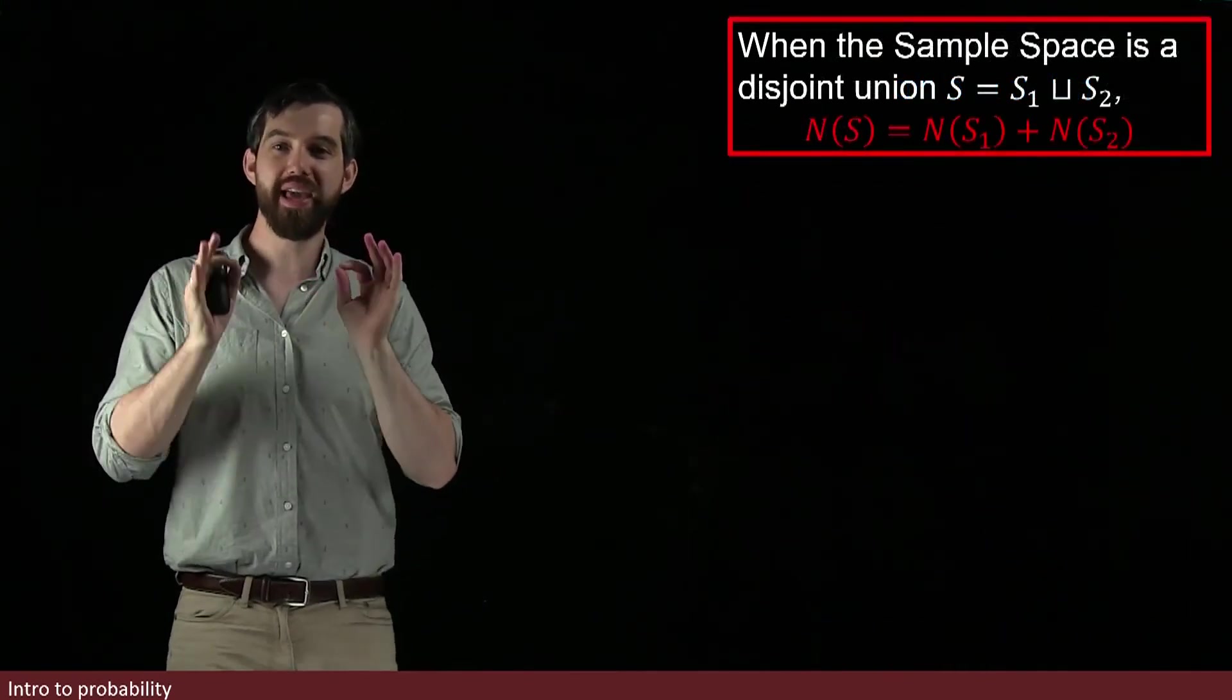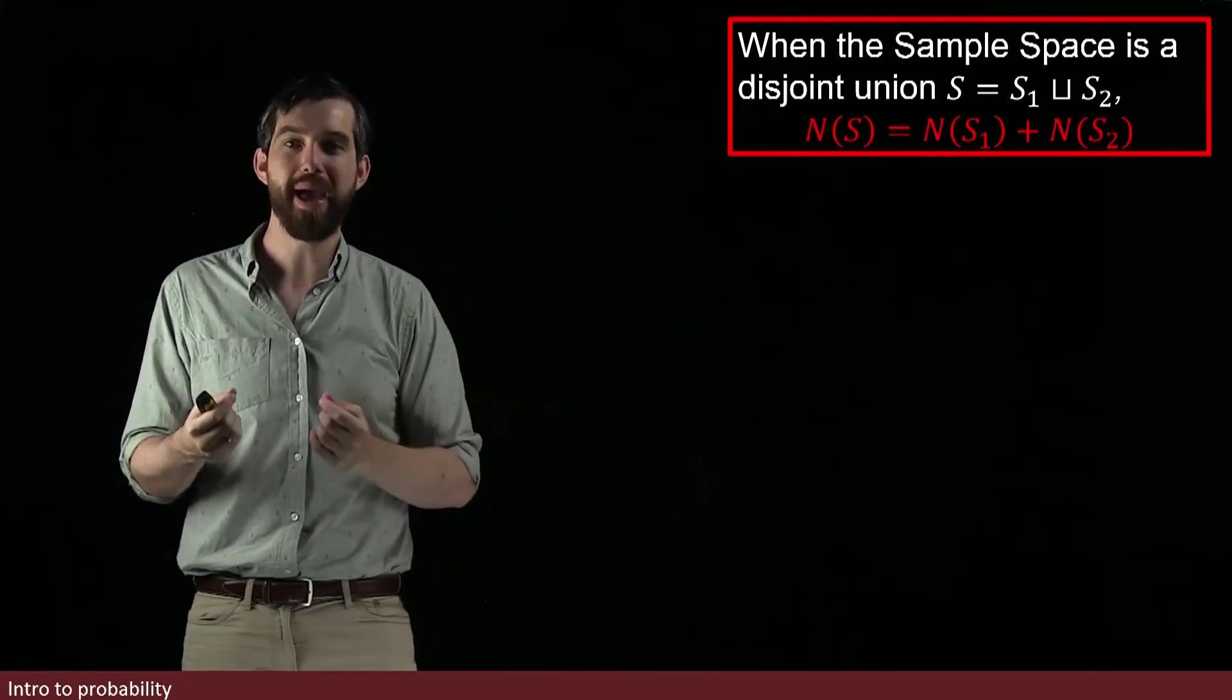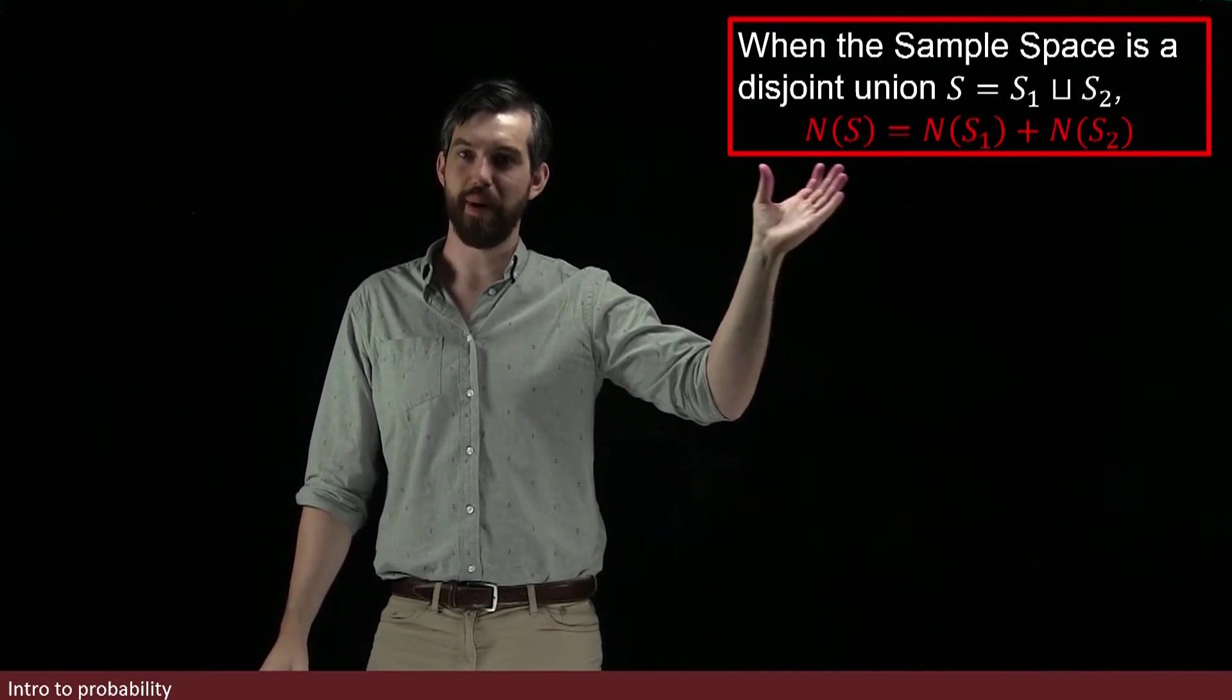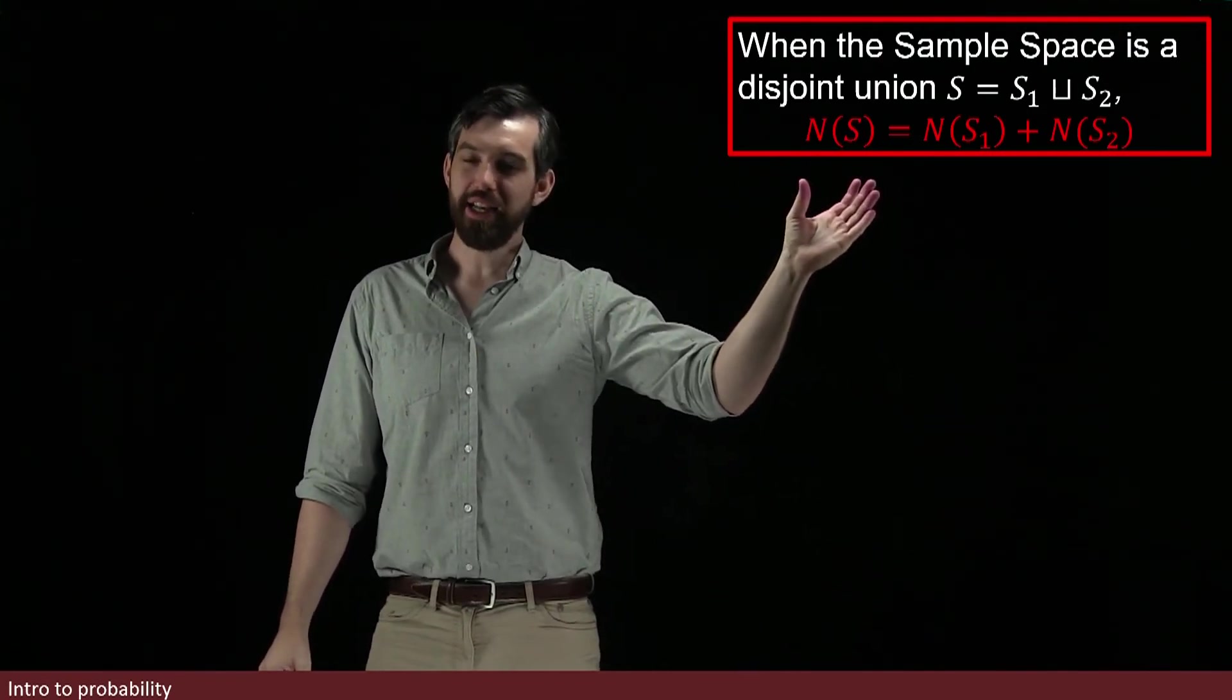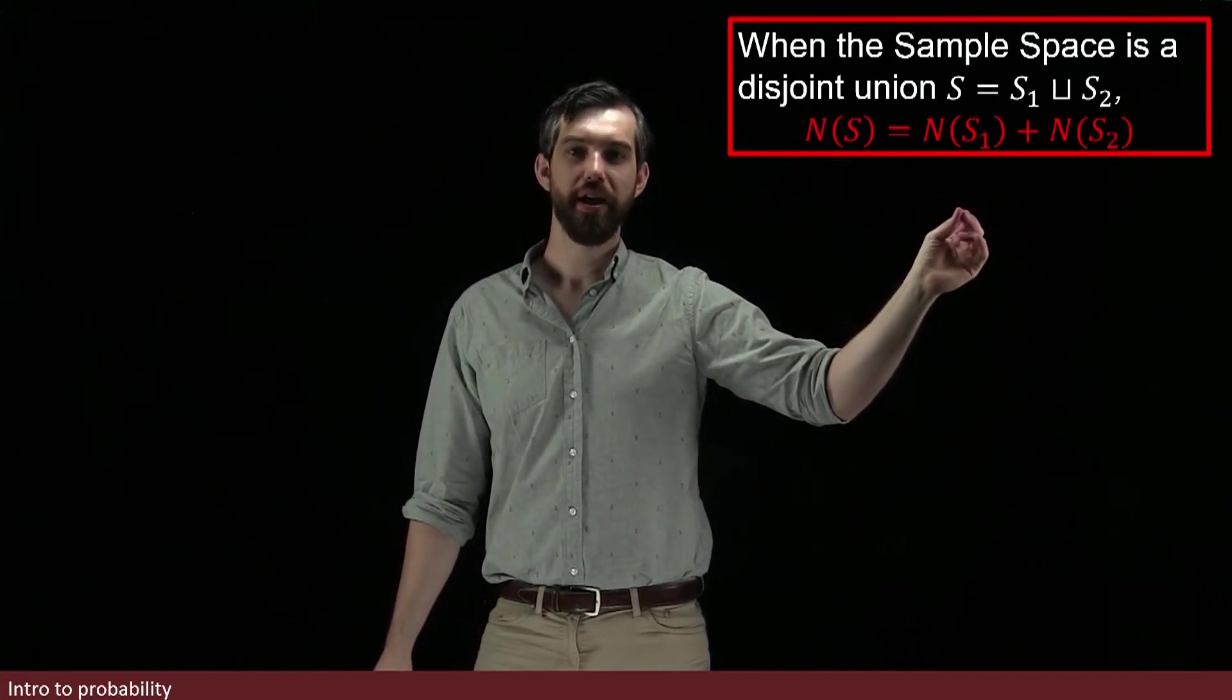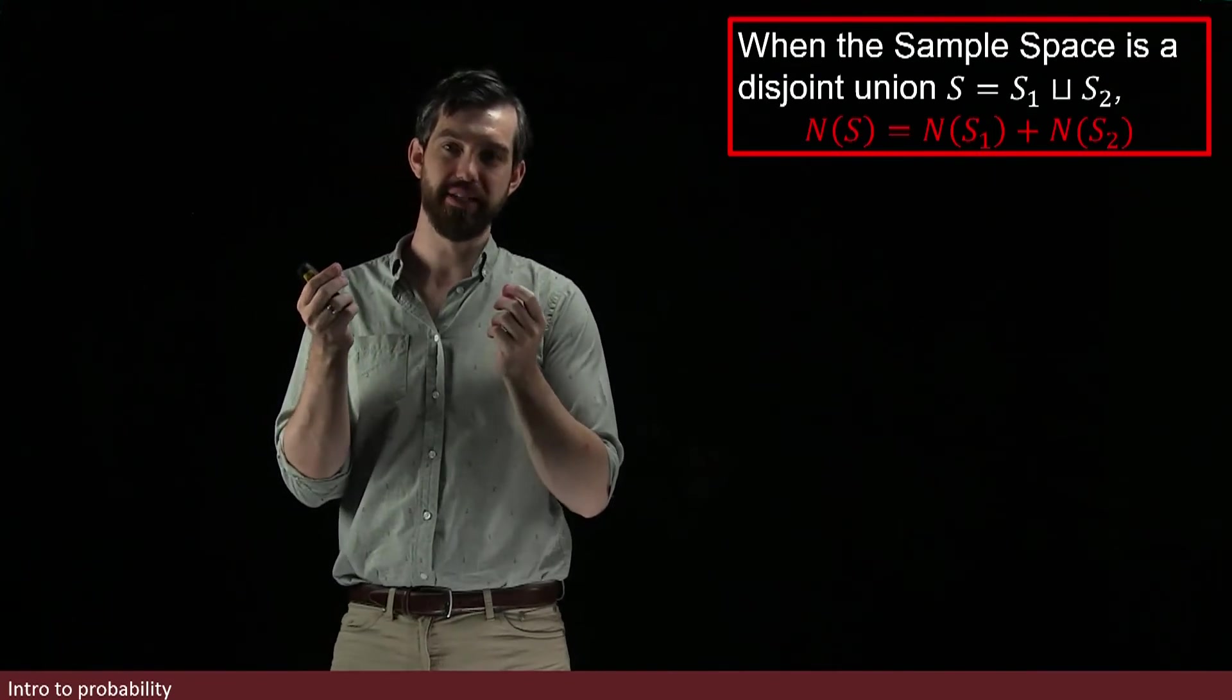So my theorem is this. When I have a disjoint union, when my sample space can be broken up as to a disjoint union of two things, then the number in my larger sample space, my S, is just the sum of the two things. I figure out how many things were there in S1, how many things were there in S2, and I add the two of those things together.